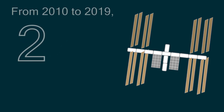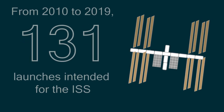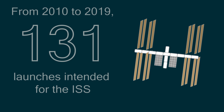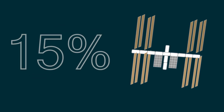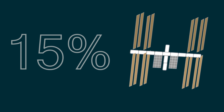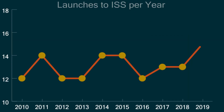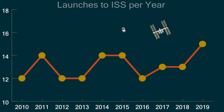Another interesting destination is the International Space Station. Over this time frame, there were 131 orbital rocket launches that intended to reach the ISS — I say intended because some missions did fail prior to arrival. This makes up roughly 15% of all launches, so the ISS plays a big part in the industry whether it's cargo or crewed missions. Looking at the graph, it's fairly consistent, with each year having anywhere from 12 to 15 launches visiting the space station.